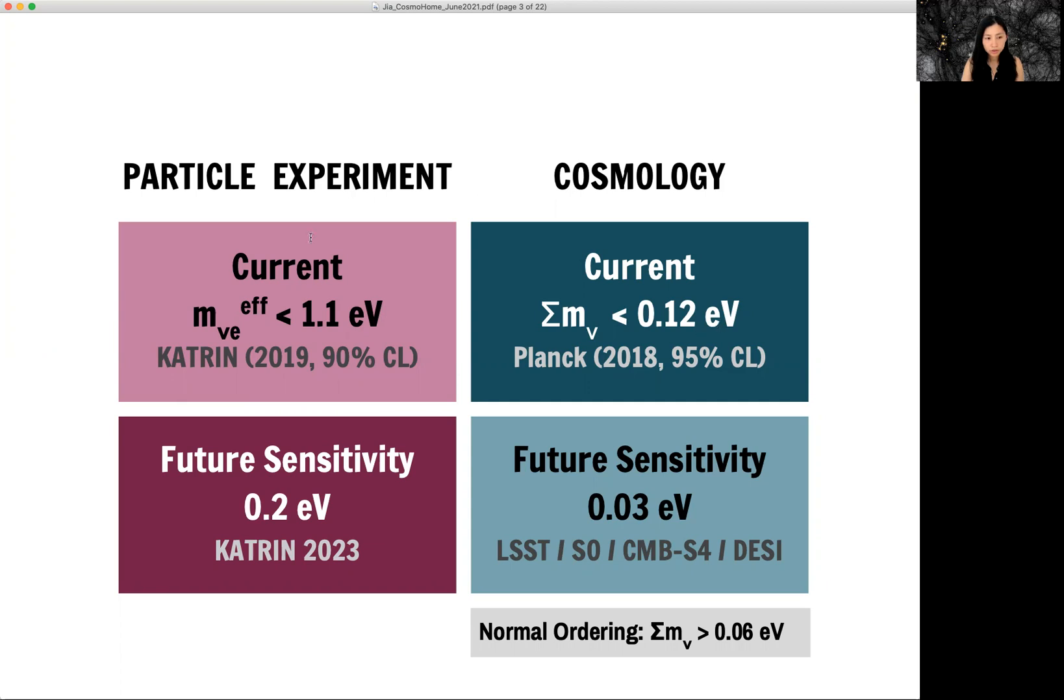So these two numbers, if you compare them, you can see that cosmology has a constraint that is one order of magnitude better than particle experiment.